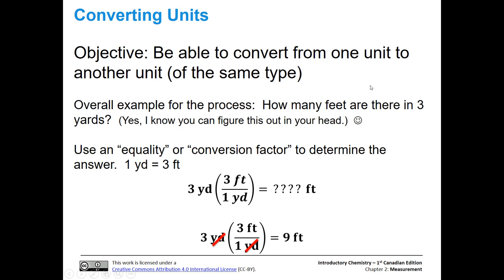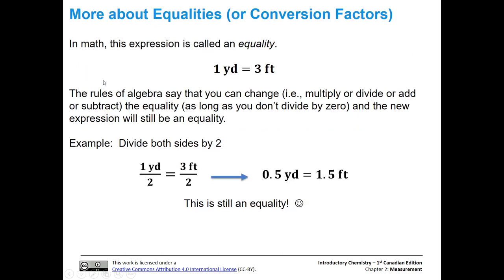This is basically the process we're going to discuss in this entire presentation. This is called an equality. You can do anything you want to it as long as you do it to both sides. For instance, let's divide both sides by two, and we end up with one half yard is equal to one and a half feet. That's still an equality — we know that's also still true.